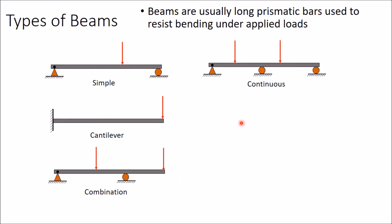Next type of beam is a continuous beam. A simply supported beam is supported at multiple points. Here you can see this is a simply supported beam and one extra support is provided. If there are multiple supports provided in a simply supported beam, then that type of beam is called a continuous beam.